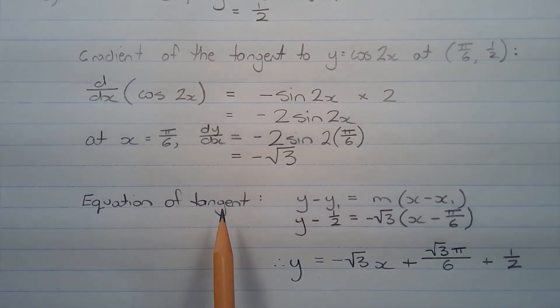So to find the equation of the tangent, we use the point gradient formula. That's y minus y1 equals m multiplied by x minus x1, where m represents the gradient of the tangent.